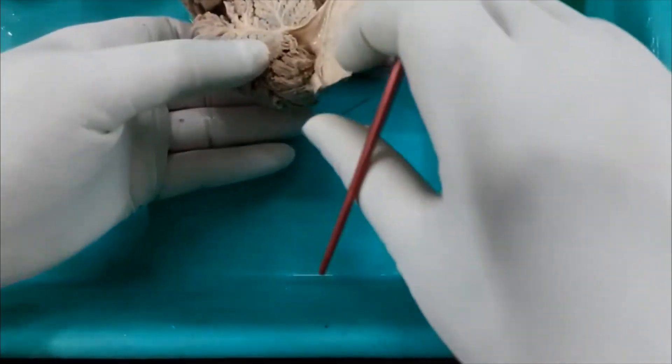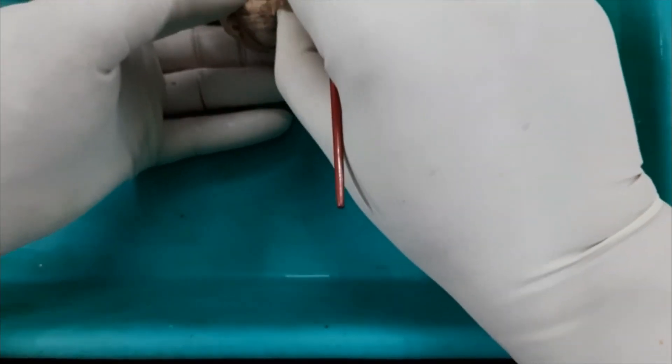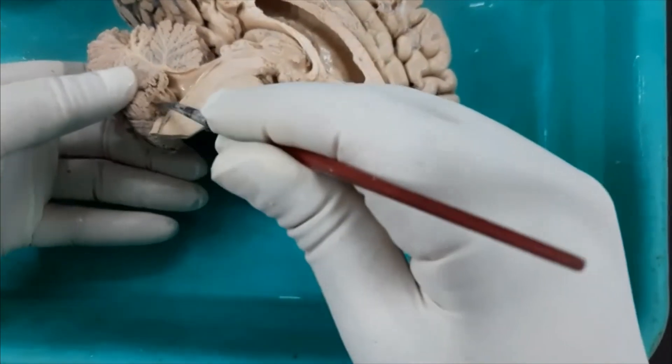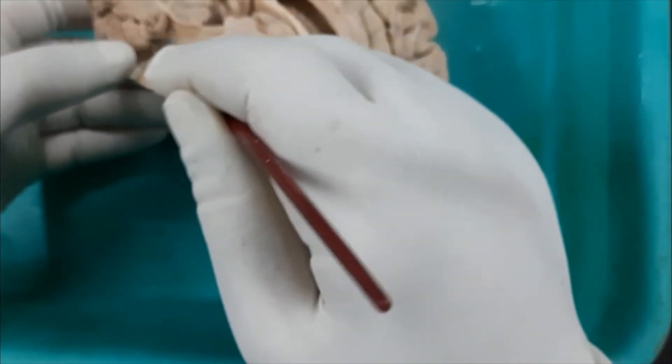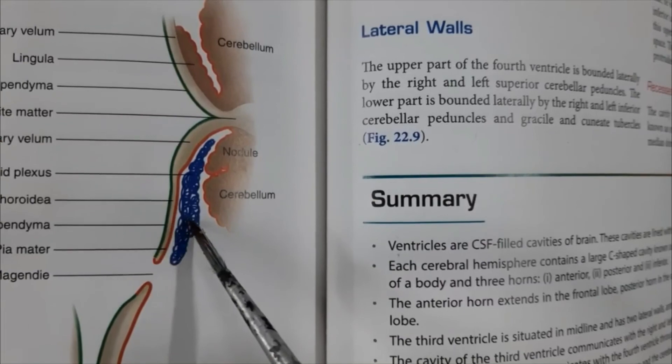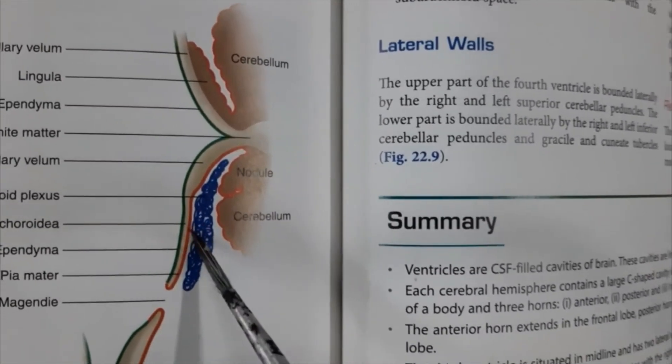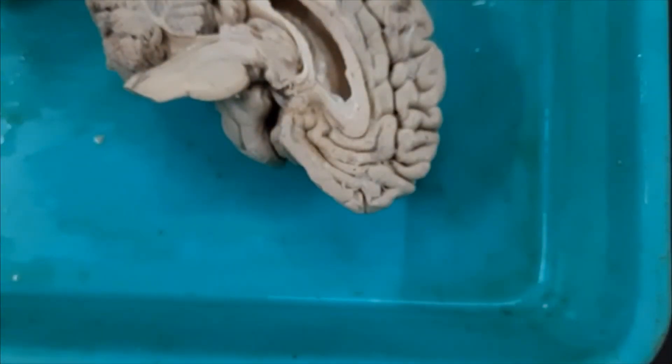The whole of the fourth ventricle is lined by ependyma and contains the choroid plexus of the fourth ventricle. Here you can see this tuft of capillaries - the choroid plexus of the fourth ventricle - which goes through the lateral recess. The tela choroidea is pushed inside to form this choroid plexus. In the diagram, the membranous tela choroidea and the choroid plexus can be seen forming the choroid plexus of the fourth ventricle at its lateral extent.